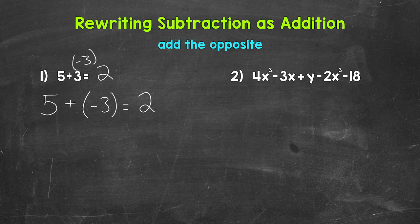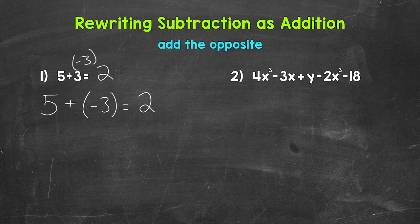Let's move on to number 2 where we will apply this to an algebraic expression. For number 2 we have 4x cubed minus 3x plus y minus 2x cubed minus 18.